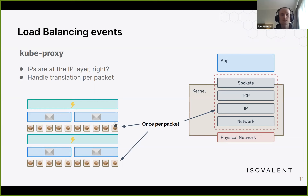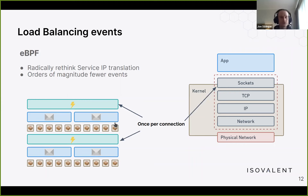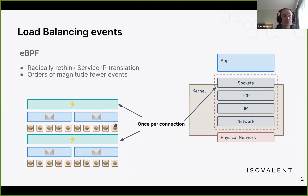eBPF allows us to rethink this problem space. The issue with the previous approach is that there are potentially many events happening — once per packet — but when the application connects to a virtual IP it's simply trying to connect at the socket layer. eBPF has event hooks all over the system including at the socket layer, so with an eBPF hook at the connect call we can implement service translation just once per connection — no per-message cost and no per-packet cost.